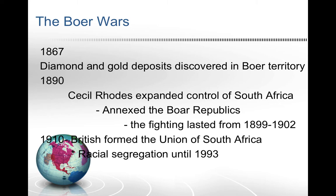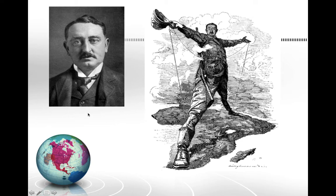In 1910, the British officially formed the Union of South Africa. Cecil Rhodes was the British imperialist of the time period — probably the most famous man from Great Britain dealing with imperialism. He established the De Beers Diamond Company, which still exists today, and made millions from diamonds harvested in that territory. This company is unfortunately known for its involvement in blood diamond scandals within Africa.